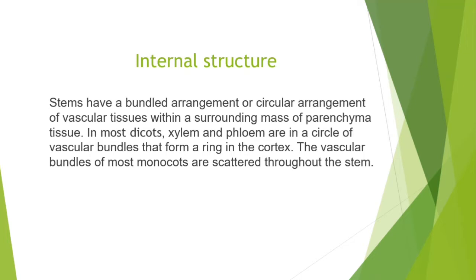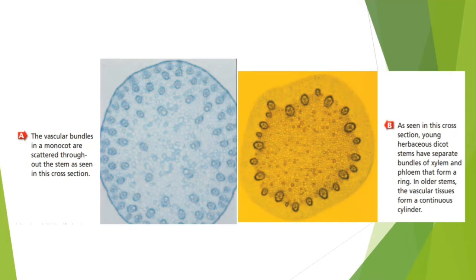In most dicots, xylem and phloem are in a circle of vascular bundles that form a ring in the cortex. The vascular bundles of most monocots are scattered throughout the stem. This photograph shows that difference: the vascular bundles in a monocot are scattered throughout the stem, as seen in this cross section, while herbaceous dicot stems have separate bundles of xylem and phloem that form a ring — more organized. In older stems, the vascular tissues form a continuous cylinder.